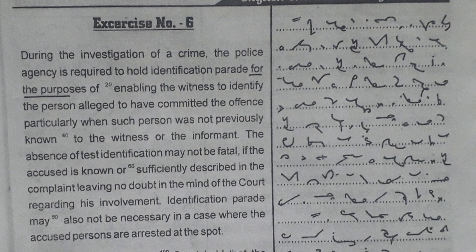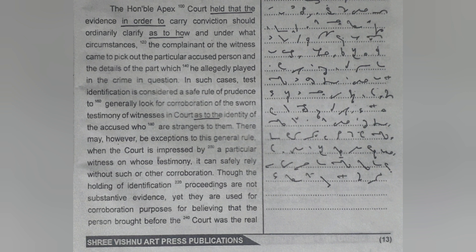Identification parade may also not be necessary in a case where the accused persons are arrested at the scene. The honourable apex court held that the evidence, in order to carry conviction, should ordinarily clarify as to how and under what circumstances the complainant or the witness came to pick out the particular accused person and the details of the part which he allegedly played in the crime. In such cases, test identification is considered a safe rule of prudence.